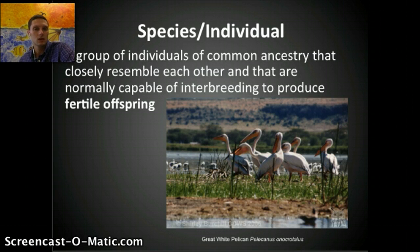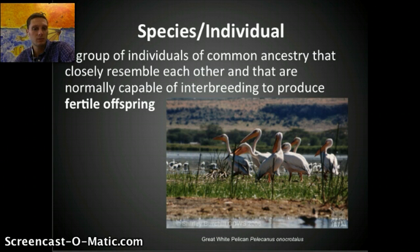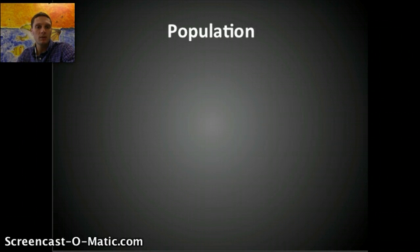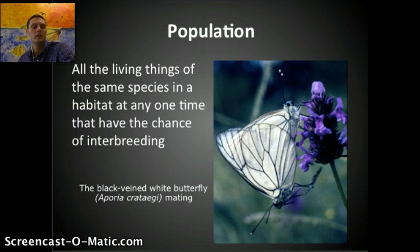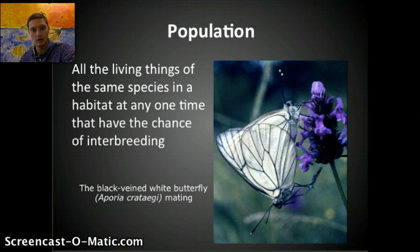A species is a group of individuals of common ancestry that closely resemble each other and are normally capable of interbreeding and producing fertile offspring. That production of fertile offspring is extremely important — if two organisms can't produce fertile offspring, they're generally considered different species. A population is all of the living things of the same species in a habitat or particular area that have a chance of interbreeding.